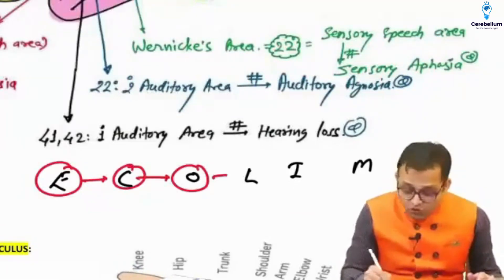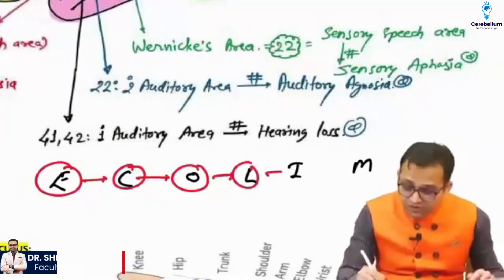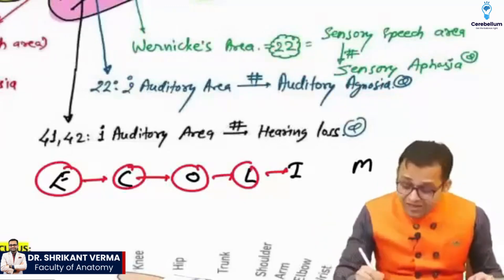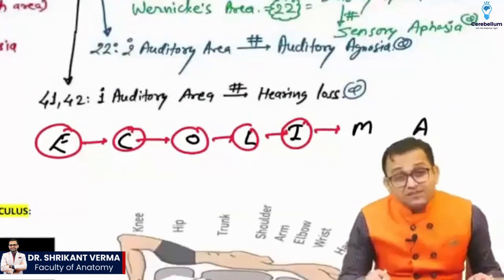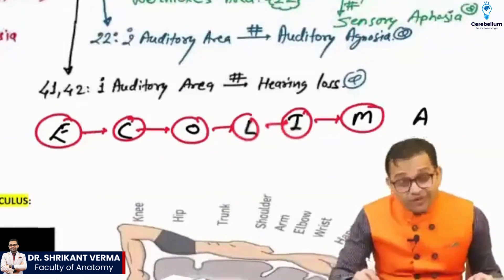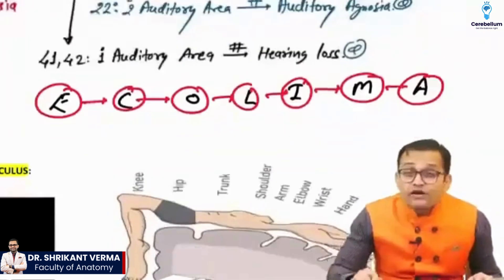C for cochlear nucleus, O for olivary nucleus, then L for lateral lemniscus, then I for inferior colliculus, then M for medial geniculate body, and then A for auditory area.